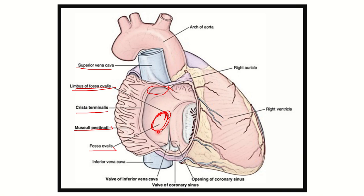The tricuspid valve is also visible here, located between the right atrium and the right ventricle, and it is considered part of the right atrium. To summarize, structures within the right atrium include: superior vena cava, inferior vena cava, valve of inferior vena cava, valve and opening of the coronary sinus, musculi pectinati, crista terminalis, and fossa ovalis.